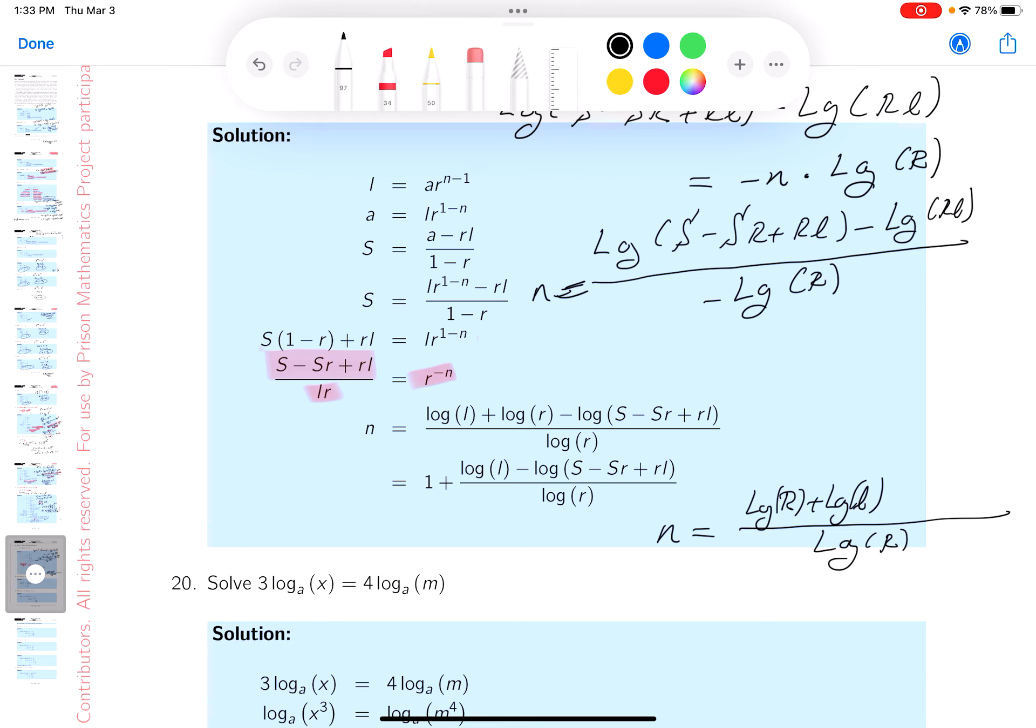And then we get minus log(S minus Sr plus rl). I want to point out where this is neatly written down for you. Log r, log l, minus the log of (S minus Sr plus rl) over log r.